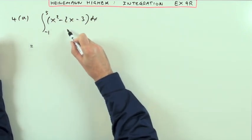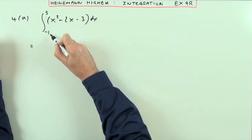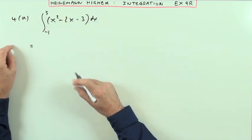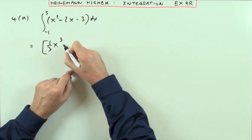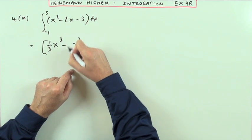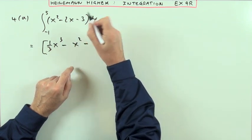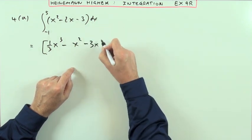It'll simply be the integral of that evaluated at 5, take away evaluated at negative 1. So what is that? I've got x up to 3, divide by 3. Up to 2, divide by 2. The constant term goes back to linear, so 3x.